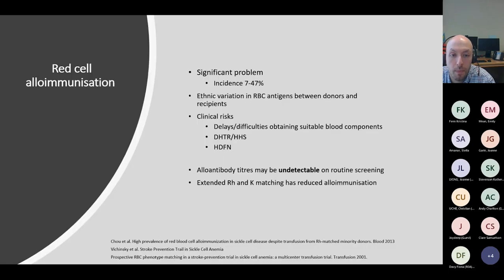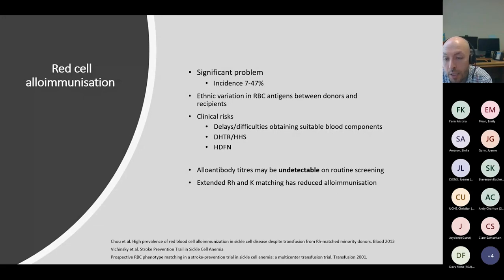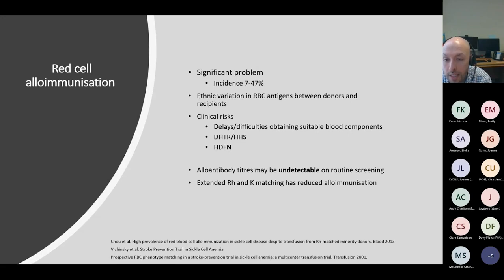Red cell alloimmunization is one of the major complications. The reported incidence does vary, but more recent reports suggest a lower incidence since the introduction of extended Rh and Kell-matched units. The incidence varies depending on patient age and red cell exposure. One of the contributing factors is ethnic variation in red cell antigen expression between donors and recipients, further complicated by significant heterogeneity in the RH gene in individuals from Black African and Caribbean backgrounds.